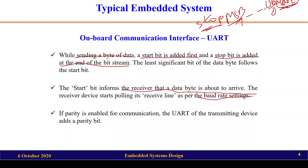The stop bit indicates the end of the bit stream. After the start bit, the receiver polls for data from bit position 0 to position 7. When it receives the stop bit, the receiver knows it is the end of the bit stream and stops the communication. A parity bit can also be included in the communication.